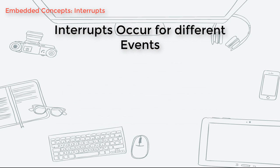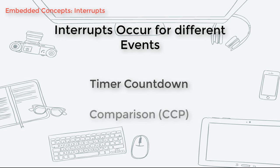Interrupts occur for different events, and these events or situations in which the interrupts occur are chosen by the programmer. The timer can be set to count down to zero, and when it does, an interrupt can occur. Or you can set the CCP module to compare values, and if it is the same as your intended value, an interrupt can occur.